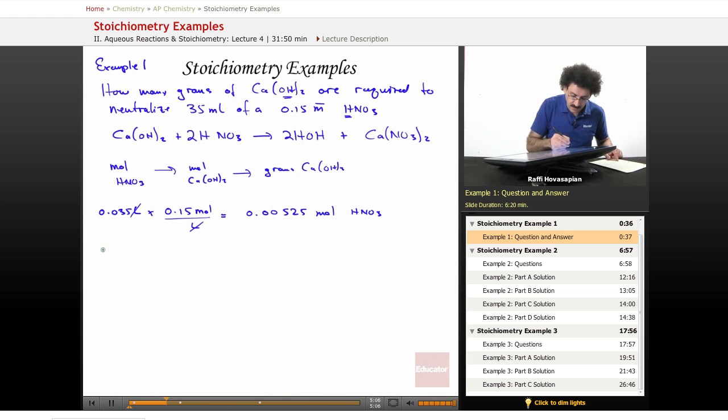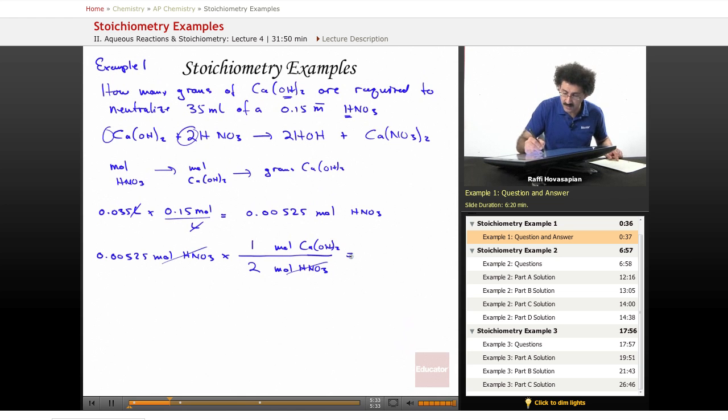Well, 0.00525 mole of HNO3, and the mole ratio is two moles of HNO3 per one mole of calcium hydroxide. Therefore, when we cancel that, we end up with...